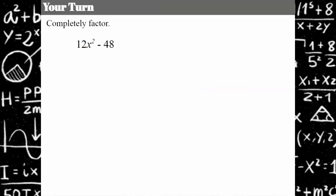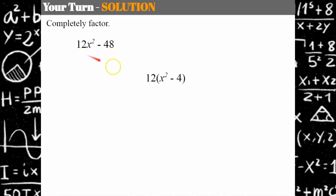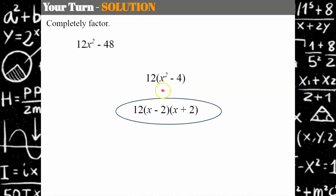Your turn — here's a hint: let's see what you've learned so far in our unit on factoring. Can you completely factor this polynomial? Welcome back. You should look for a greatest common factor as your first step in factoring, even with a special product. Both terms have a GCF of 12, so factoring that out leaves x² − 4. These are both perfect squares and we have the sum and difference pattern. So completely factored: 12(x − 2)(x + 2).